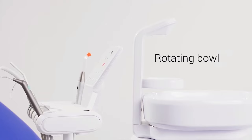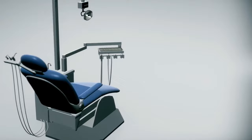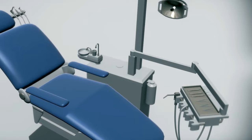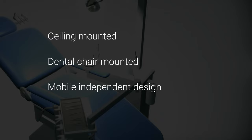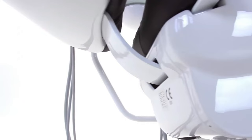Now let's look into the types of dental chairs. While Dr. John Naughton's design of the chair became what we more or less use these days, technological advancements have elaborated the same design into three new types. While there can be different attachments to the chairs, the design is usually of three main types: ceiling mounted, dental chair mounted, and mobile independent design.